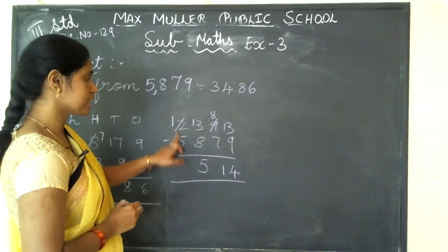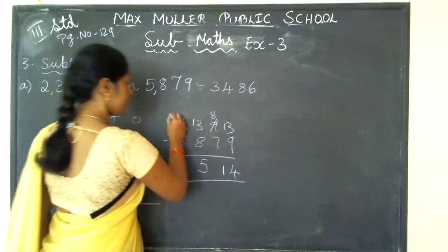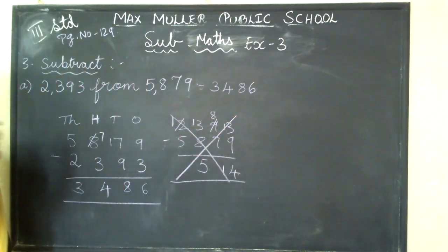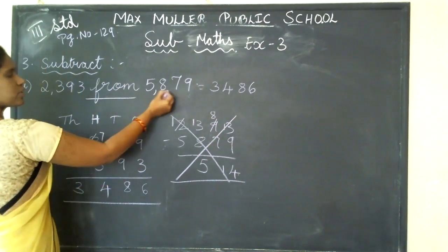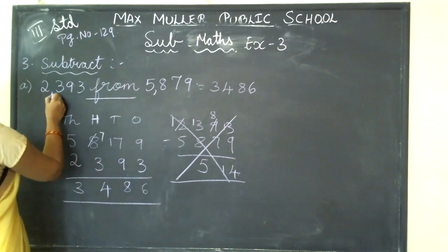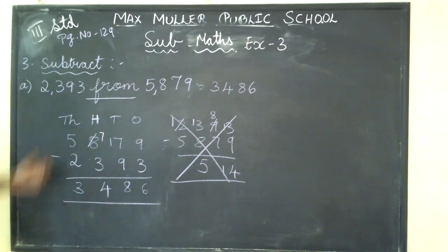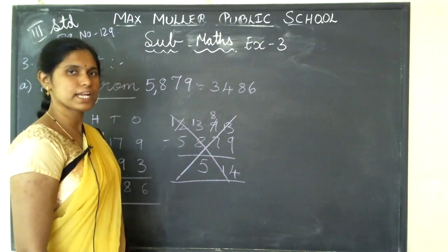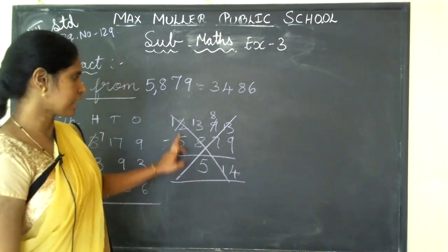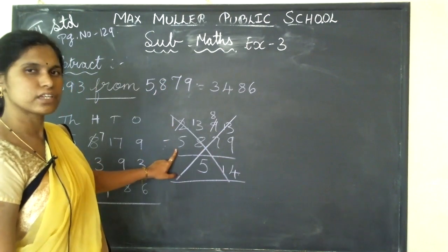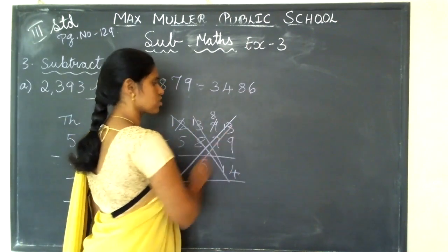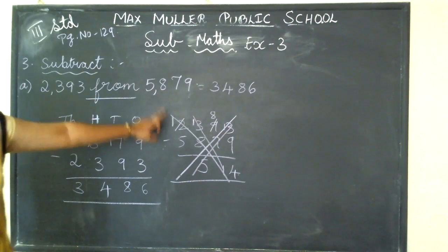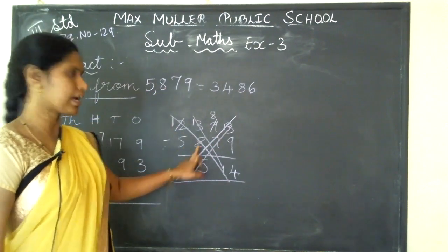From 1, can I minus 5? No. So this problem will become wrong. The method you have to change — when you see 'from', you have to write the bigger number first, then write the smaller number. If you write the smaller number first, then the bigger number, you cannot subtract. Can you subtract? I have shown this also — can I easily subtract from 1? Can I minus 5? No. So this method is wrong.